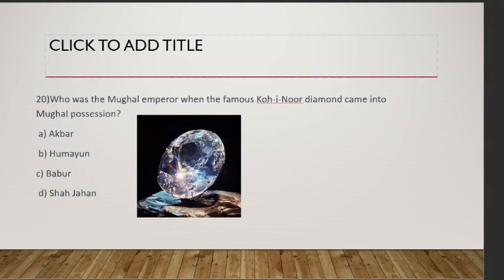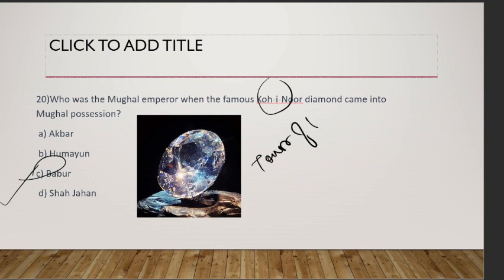Last question: who was the Mughal emperor when the Kohinoor diamond came into Mughal possession? The emperor was Babur. And where is the Kohinoor diamond today? It is in the Tower of London, UK. That was all — thank you, have a great day.